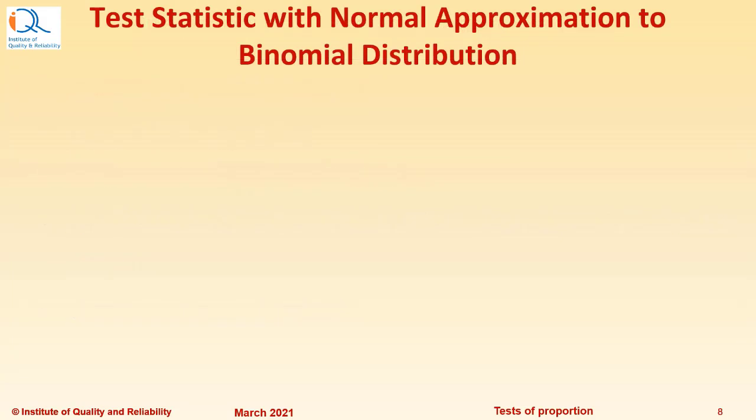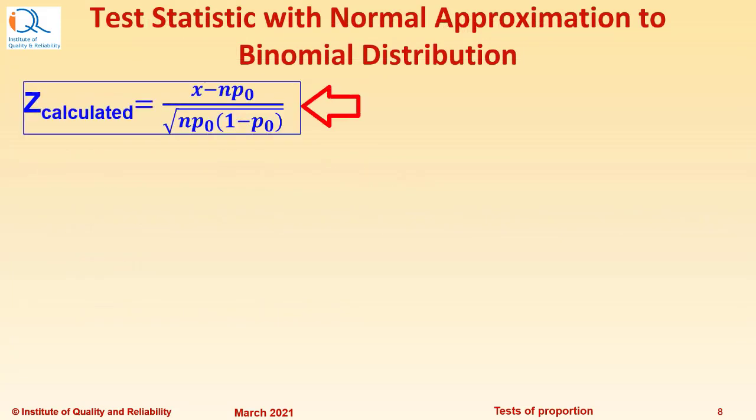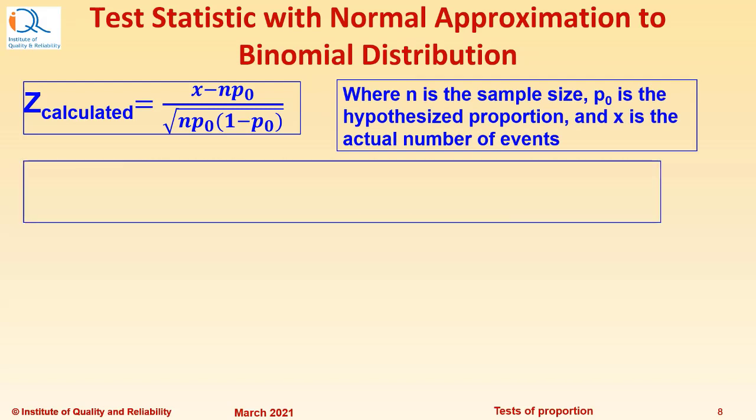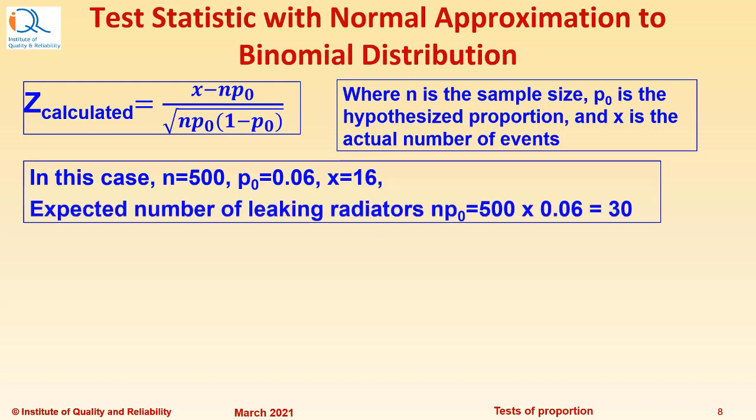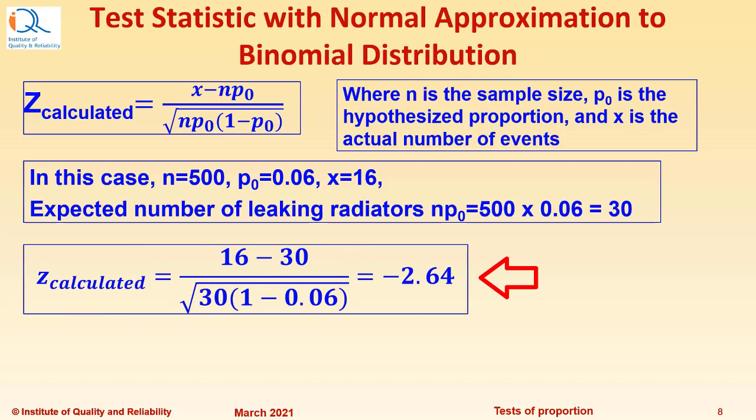So let us make the calculations. Z calculated formula is x minus np0 upon square root of np0 times 1 minus p0. In this case, n equals 500, p0 is 0.06, x equals 16 because in the pilot lot, 16 radiators were leaking out of 500. Expected number of leaking radiators np0 equals 500 times 0.06, so that is 30. Now the Z calculated will be 16 minus 30 upon square root of 30 times 1 minus 0.06, which works out to be minus 2.64. This is the Z score.